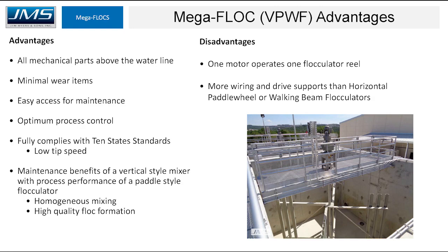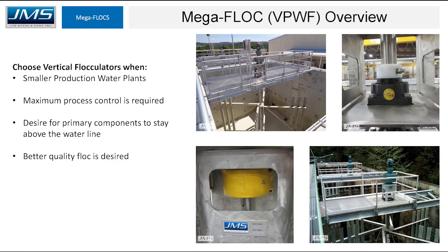The disadvantages of vertical paddle wheel flocculators are that one motor operates one floc reel, which drives up cost, and there is more wiring and drive supports than horizontal or walking beam flocculators. You might choose vertical paddle wheel flocculators for small production water plants where maximum process control is required, where components staying above the water line for easy maintenance is desired, and where the highest quality floc particle is needed.